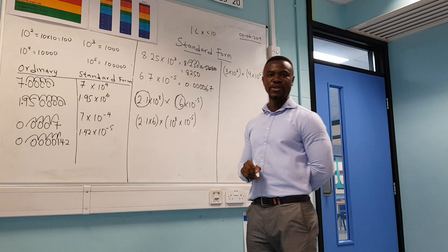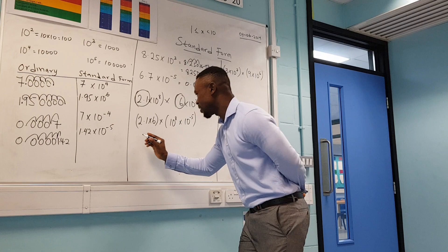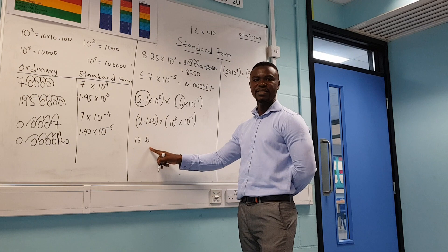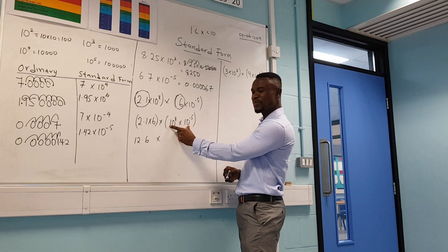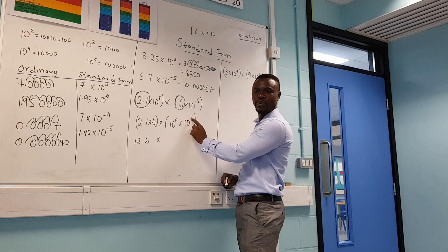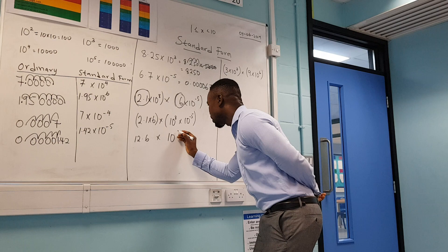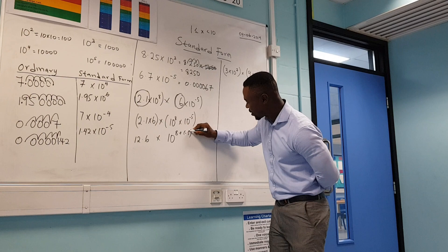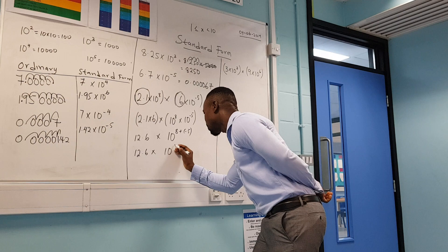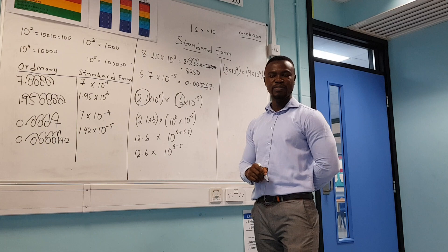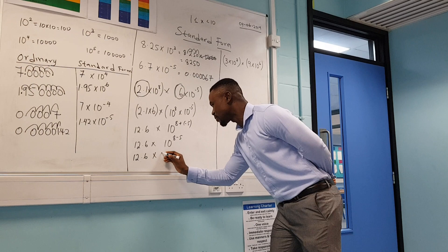So 2.1 times 6: six times 1 is 6, six times 2 is 12, so that gives 12.6. For the powers of 10, we use the law of indices — when the base numbers are the same and you're multiplying, you add the powers. So 10 to the 8 times 10 to the minus 5: 8 plus minus 5 is the same as 8 take away 5, which gives 10 to the power of 3. So we have 12.6 times 10 to the power of 3.